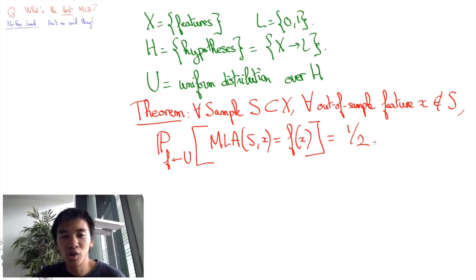For all sample sets S and any X that's not in the sample set, the probability for F drawn from U that the prediction of our machine learning algorithm trained with sample set S and applied to the feature X, the probability that this prediction is going to be equal to the real label F of X is equal to one-half, not more, not less.